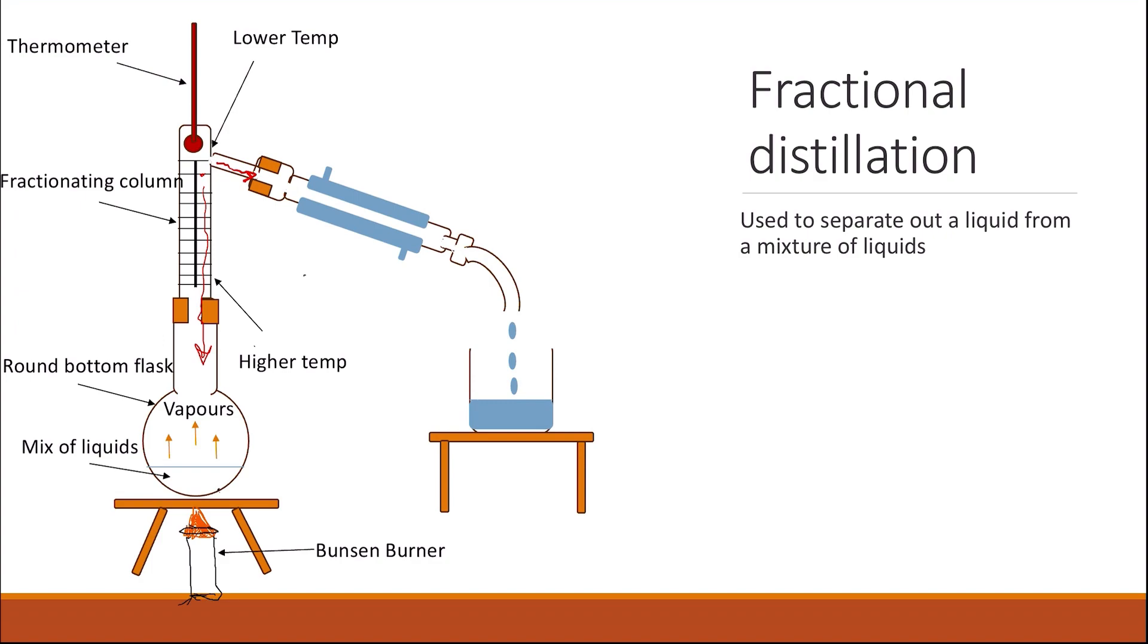Then the liquid with the lower boiling point will go into the Liebig condenser, where we have cooling water running through with the water coming in from the bottom, coming out from the top. And then the liquid with the lower boiling point will be condensed and can be collected or distilled inside the receiving flask.